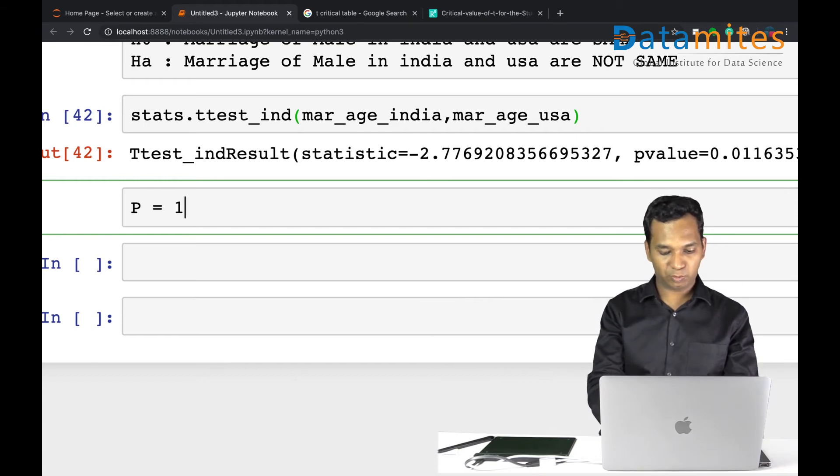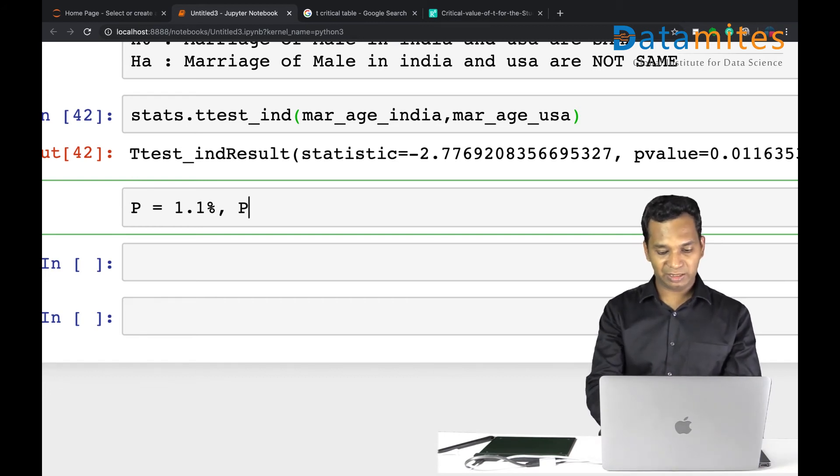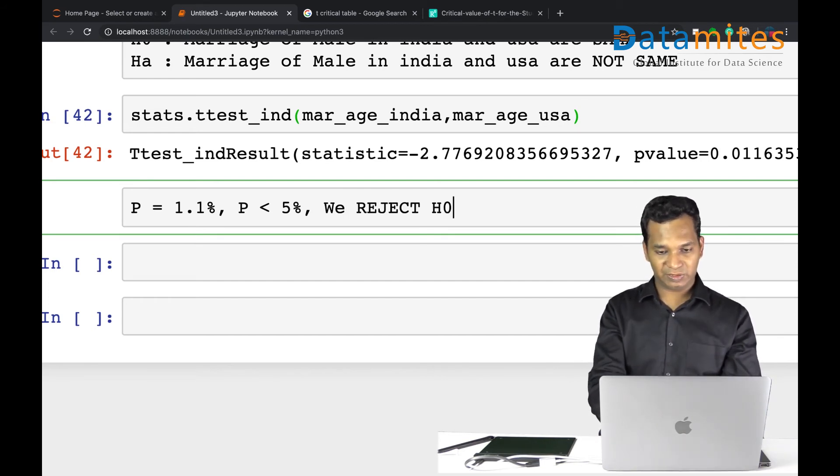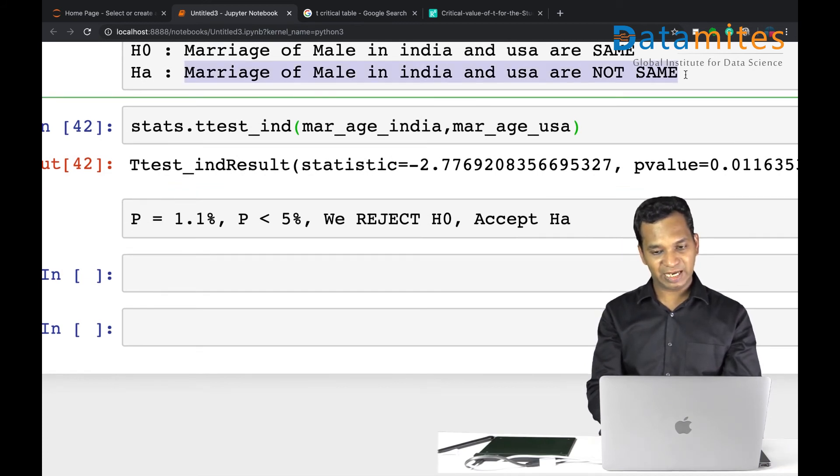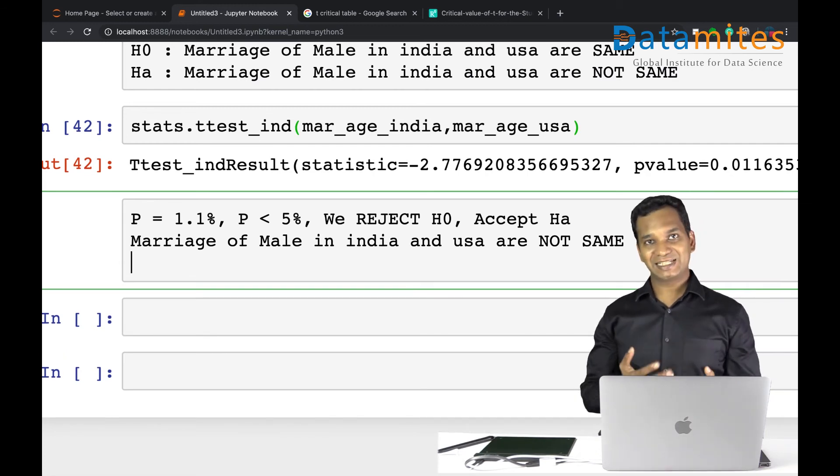So I'm going to conclude the test now saying p-value is equal to 1.1 percent, which is 0.011, which means p is less than 5 percent. So we can say, you know, remember the thumb rule: p less than 5 percent, we reject null hypothesis. We reject null hypothesis, so we accept alternate hypothesis. What's our alternate hypothesis? Alternate hypothesis is marriage age in India and USA are not same.